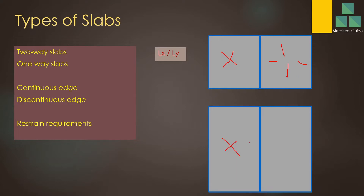Now let's move to slab design. We have different types of boundary conditions. This edge here is a continuous edge — two slabs are interconnected and it is continuous. This other edge is called a discontinuous edge, where there is no continuation of the slab. Those can be considered as a restrained edge or as simply supported edges in certain cases. The criteria is the same for both: continuous edge and discontinuous edge. Edges in the direction of load transfer are the important ones.